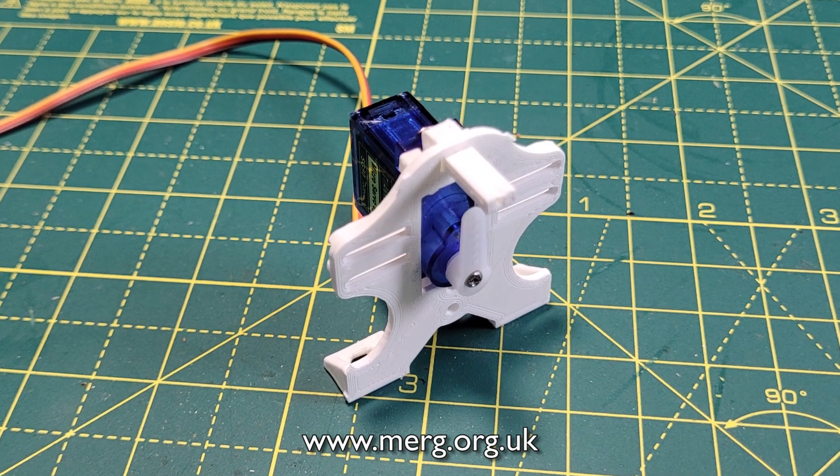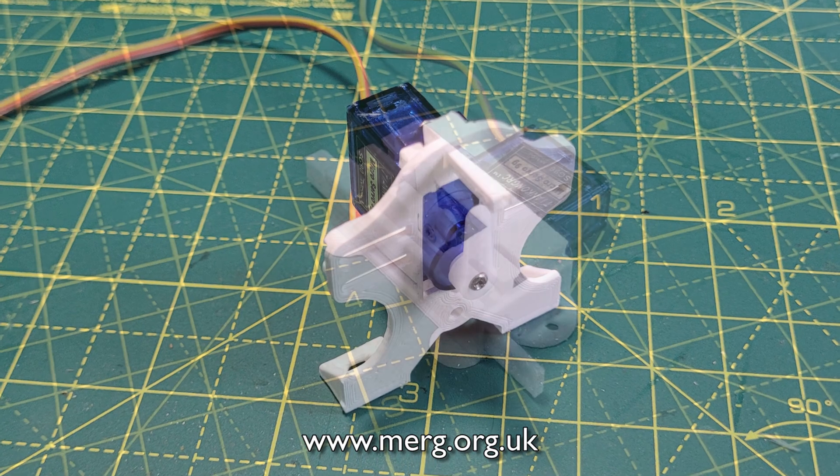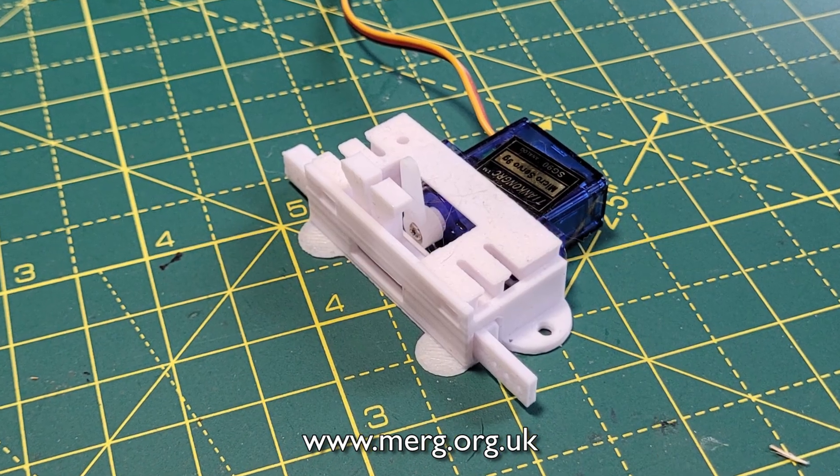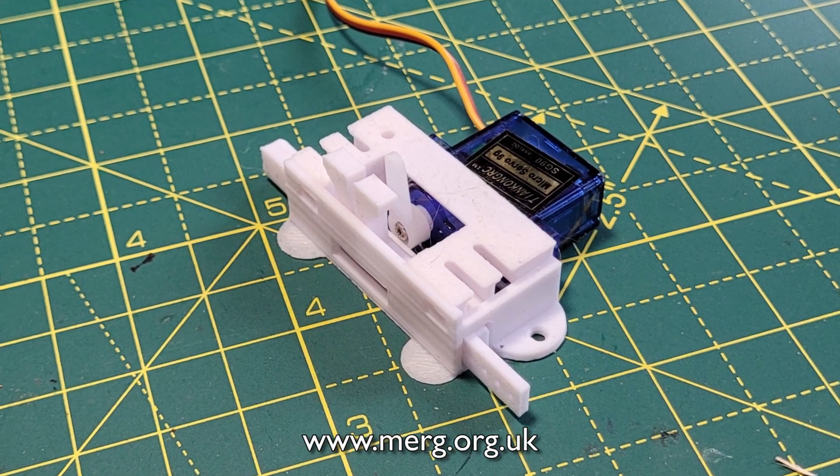I've been using 3D printed mounts, some that I've purchased from MERG, the model electronic railway group, but since getting a 3D printer I've also been printing my own based on a design that was shared on the MERG forums. But what if you're not a MERG member and you don't have a 3D printer?